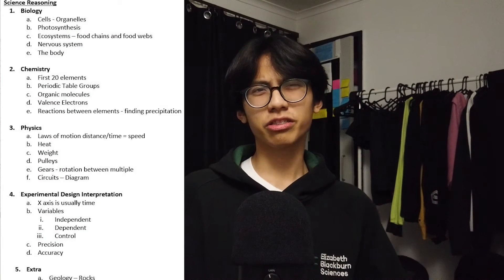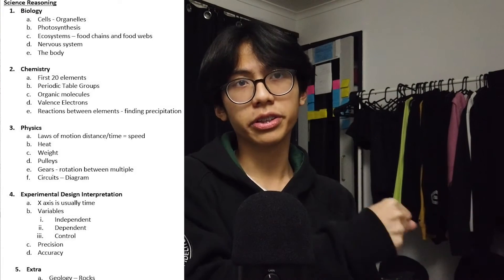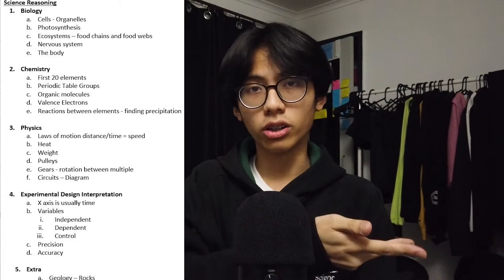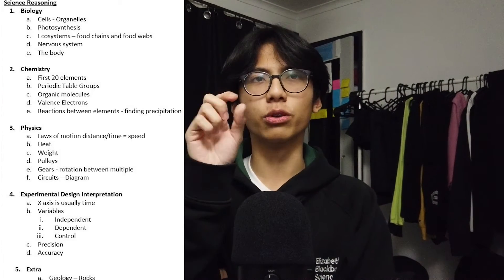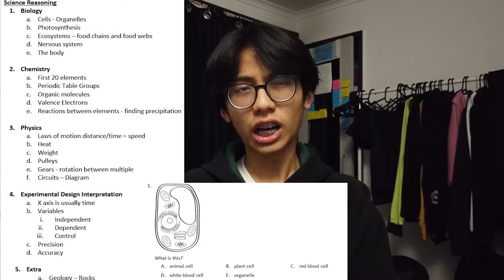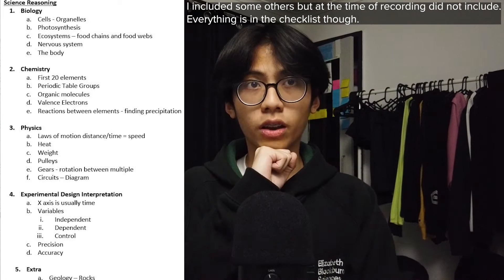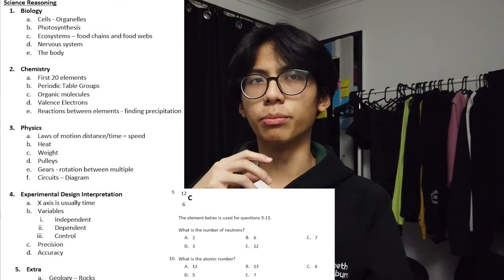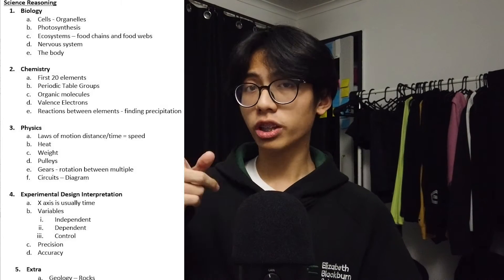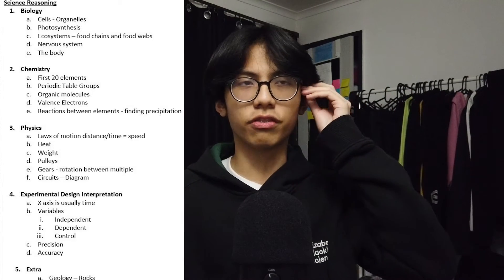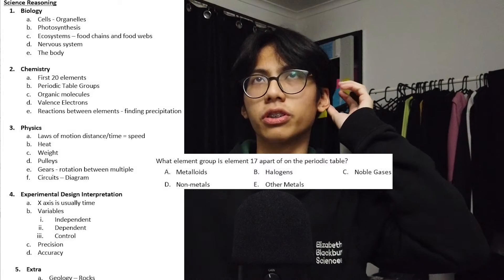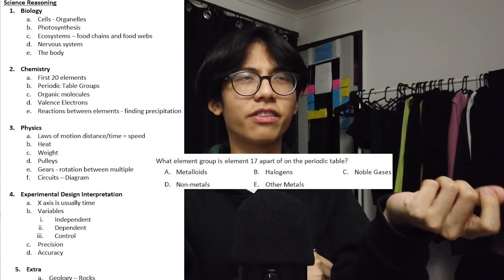The last multiple choice exam is the science reasoning exam, which contains basic knowledge from year 7 through to year 10, covering physics, chemistry, and biology. For biology, they normally ask about cells, particularly organelles, and also about photosynthesis — for example, what is the equation for it. For chemistry, they talk a lot about the first 20 elements, valence electrons, organic molecules, reactions between elements, and finding precipitation. They'll give it in graph form and ask which elements caused the precipitation. They also touch on periodic table groups.